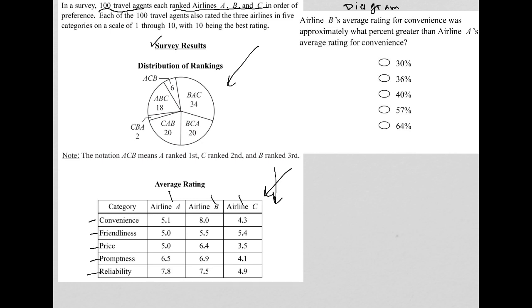So this question says, airline B's average rating for convenience. What is airline B's average rating for convenience? That would be right here. So that's 8.0.